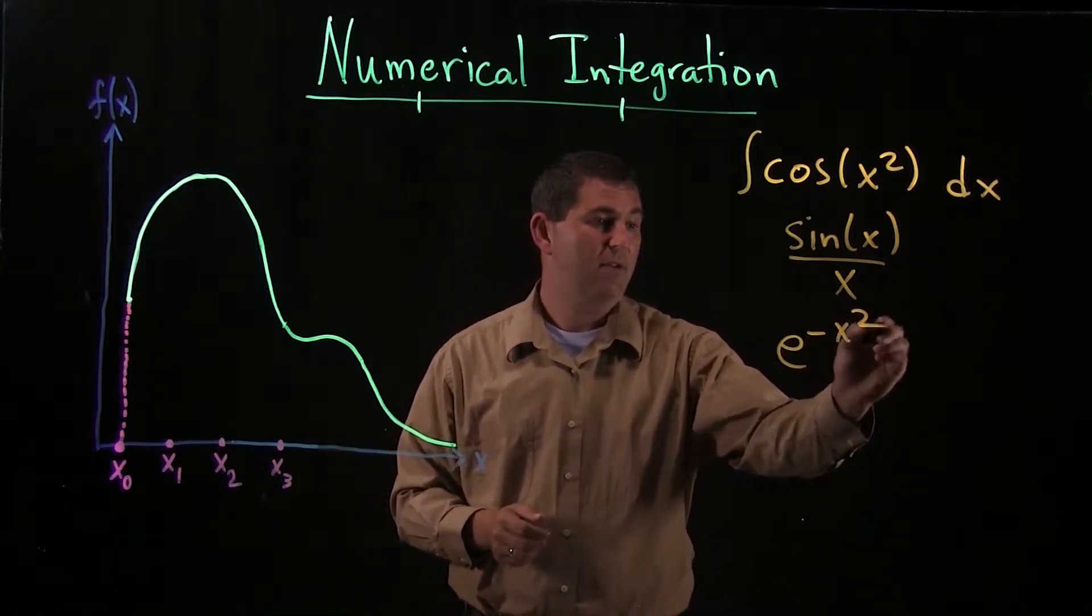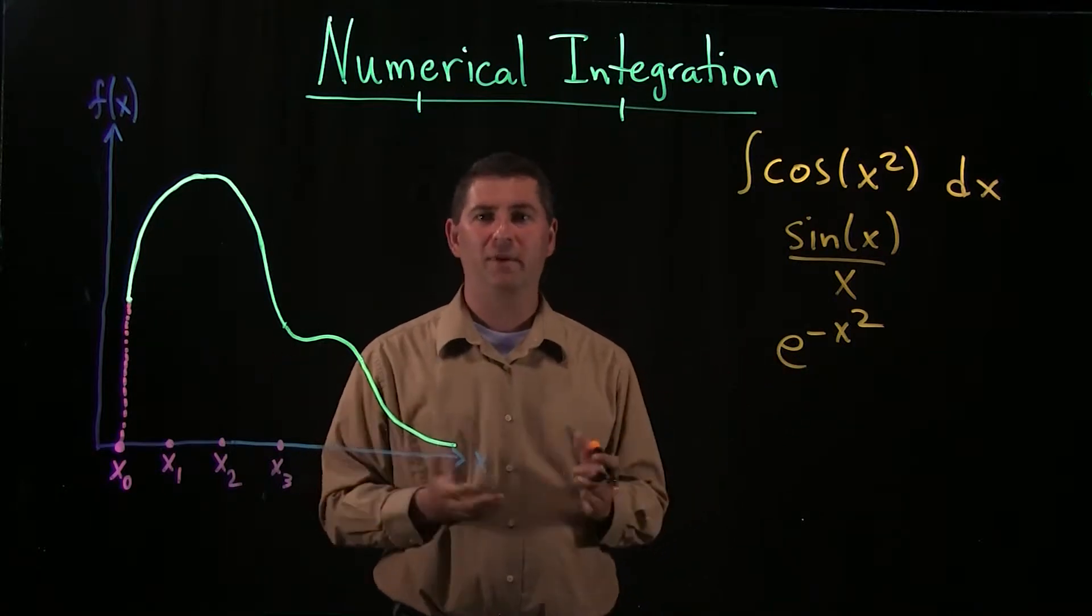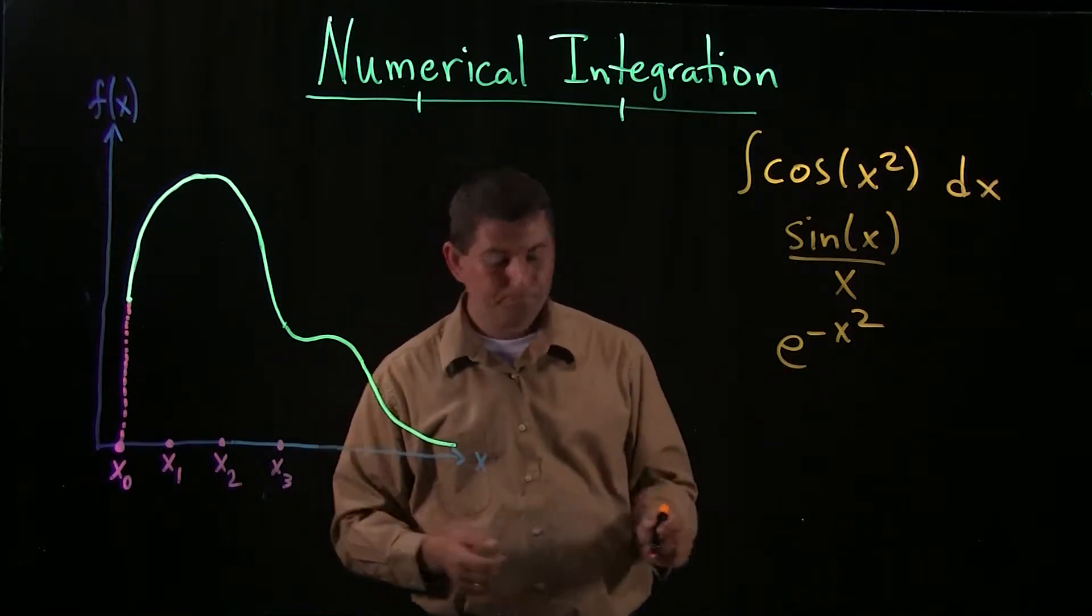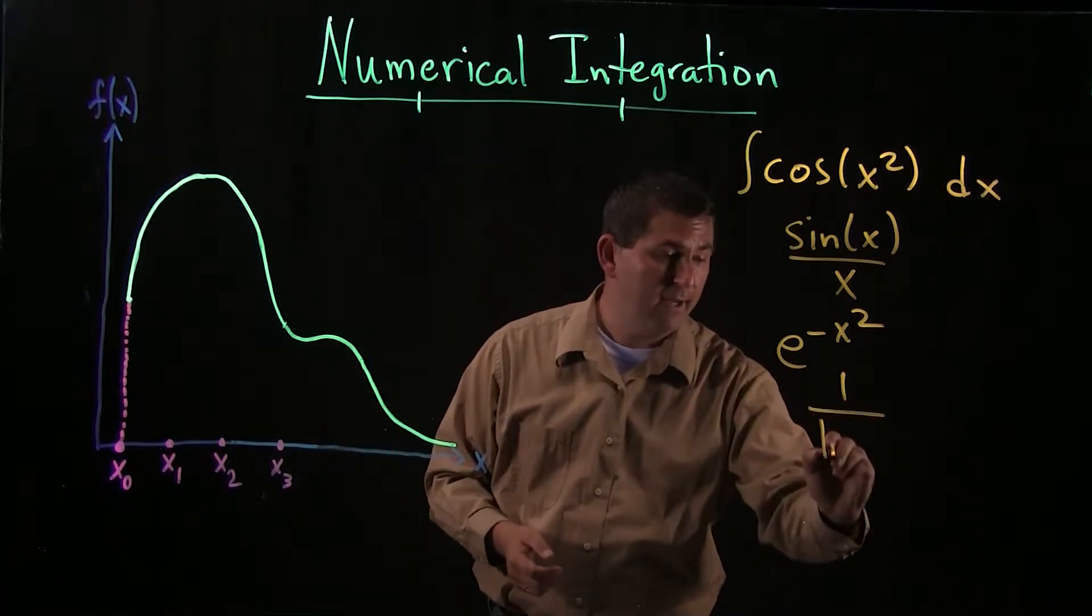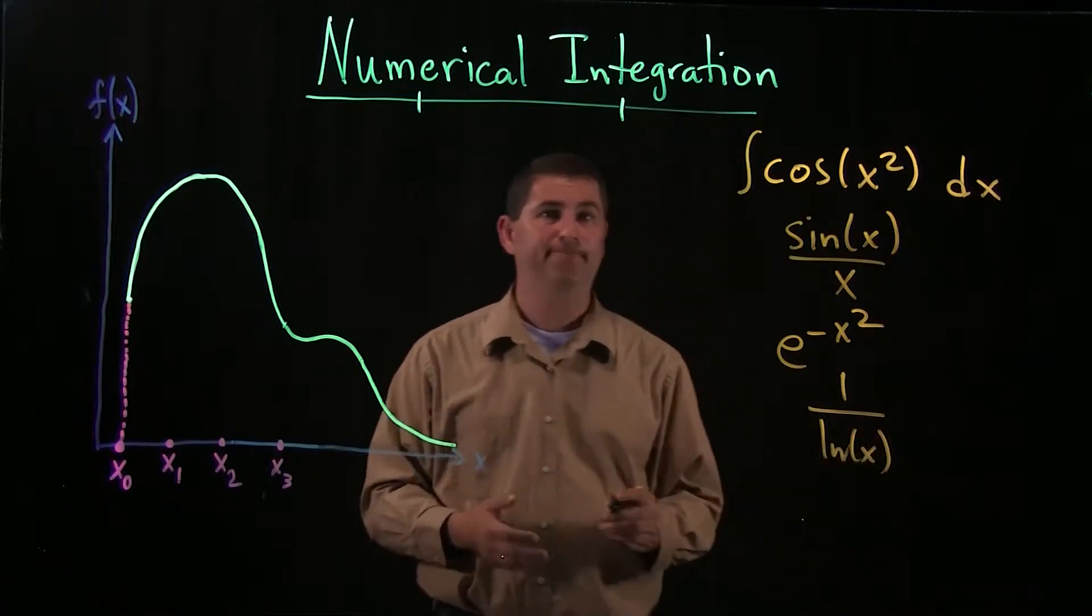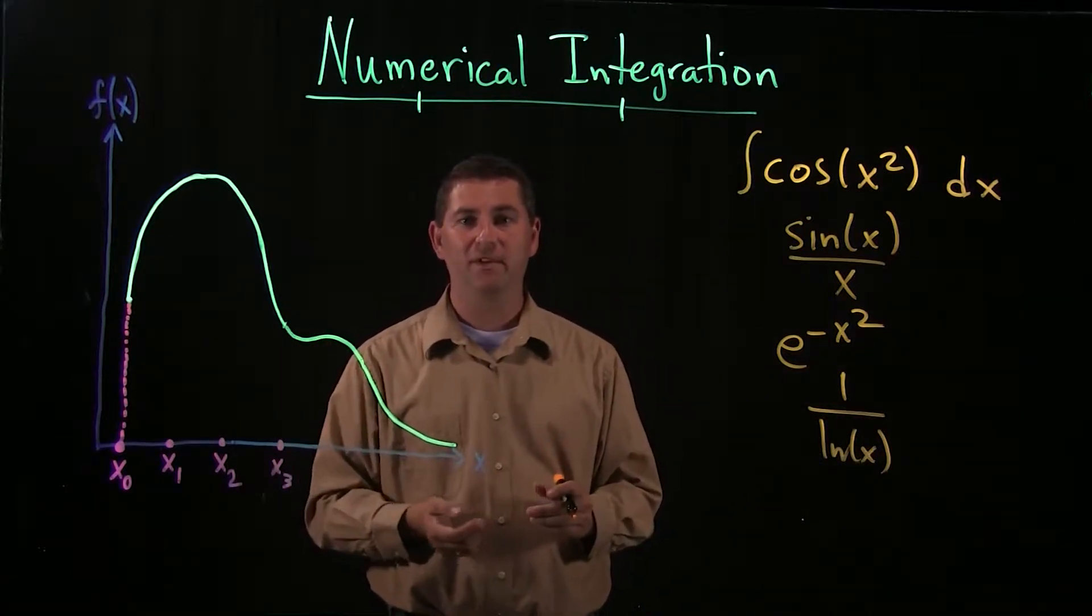Say I did e to the negative x squared. No elementary antiderivative. There's just no way to do it. One divided by the natural log of x. Not going to find an antiderivative for this one either.